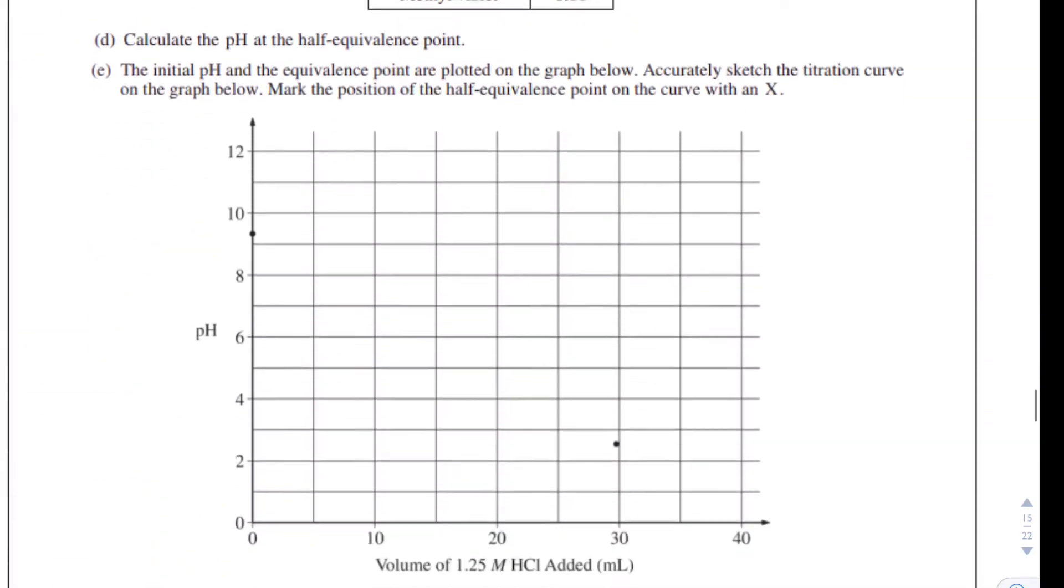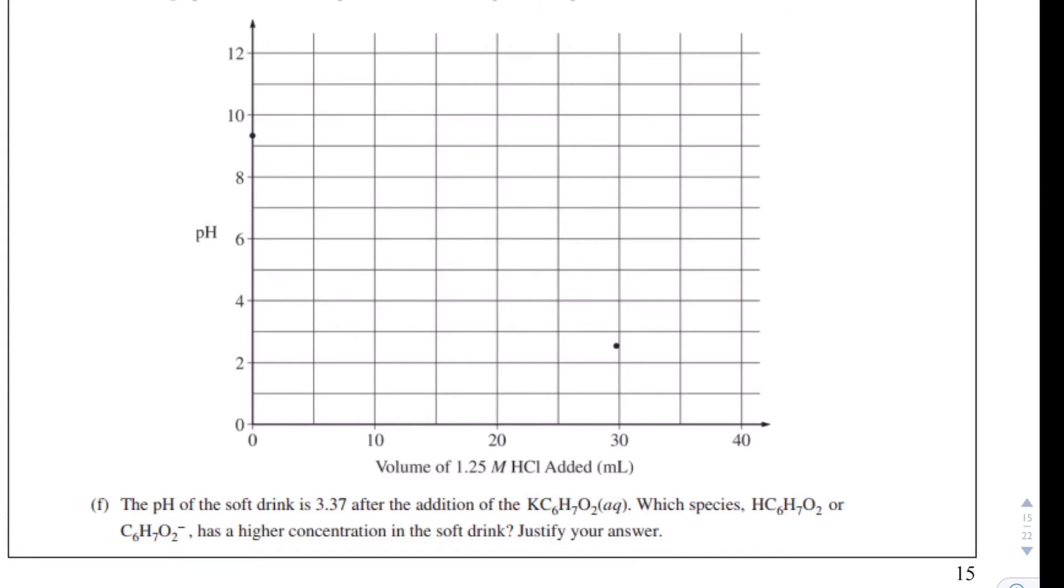Part E. We're almost done with this one. So if about 30 milliliters is our equivalence point, then our half equivalence point is like 15-ish milliliters. I understand it's a little less. It's 14 point something, but for all intents and purposes. And at that half equivalence point, we just solved for the pH, and the pH was 4.76. So I'm going to go up here and get 4.76 and put an X right about there.